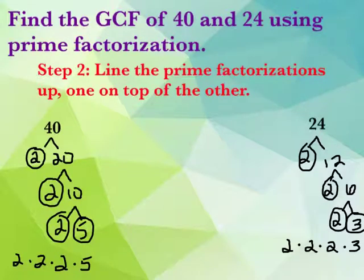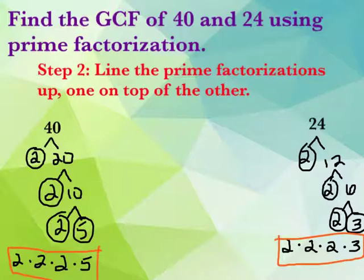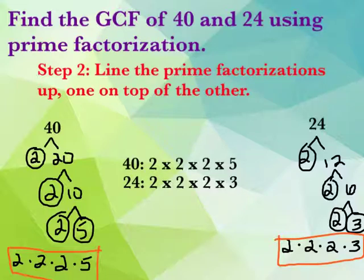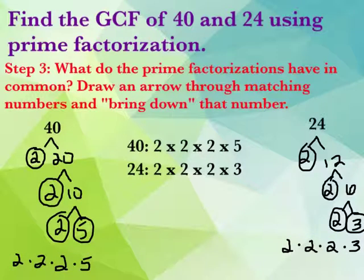All right. Step 2 of finding the GCF of 24 and 40 using prime factorization is to line the prime factorizations up one on top of the other. I have duplicated what we did on the previous slide, and all we need to do then is we're going to take our two prime factorizations, the one for 40 and the one for 24, and we want to line them up one on top of the other. As you're writing your prime factorizations, writing them one on top of the other, in order least to greatest, meaning that I have 2 times 2 times 2 times 3 and 2 times 2 times 2 times 5. You don't want that 5 or that 3 intermixed. It has to be least to greatest.